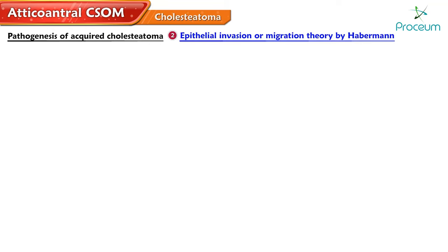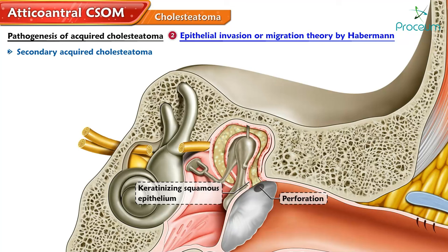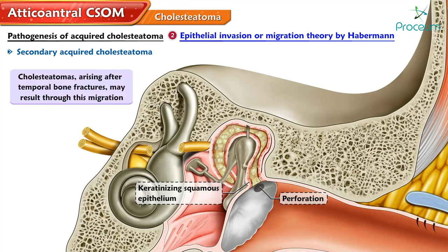Epithelial Invasion or Migration Theory by Habermann. This theory explains secondary acquired cholesteatoma. Migration of keratinizing squamous epithelium of the tympanic membrane or deep canal wall into the middle ear occurs through a tympanic membrane perforation. The pre-existing perforation is especially of the marginal type, where part of the annulus tympanicus has already been destroyed. The damaged inner mucosal lining of the tympanic membrane, due to inflammation, allows the outer keratinizing squamous epithelium to migrate inward and produce secondary acquired cholesteatoma. Cholesteatomas arising after temporal bone fractures may also result through this migration.